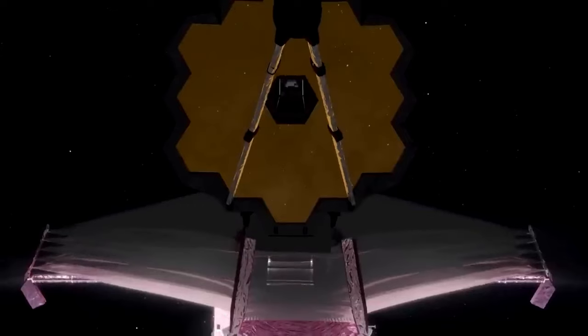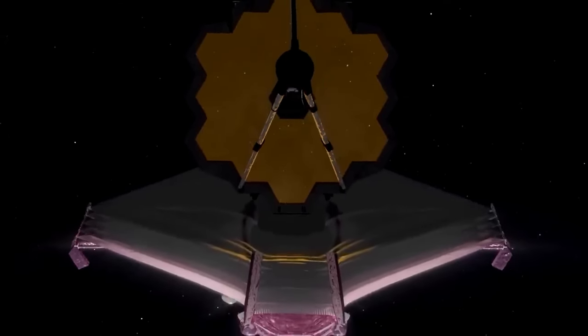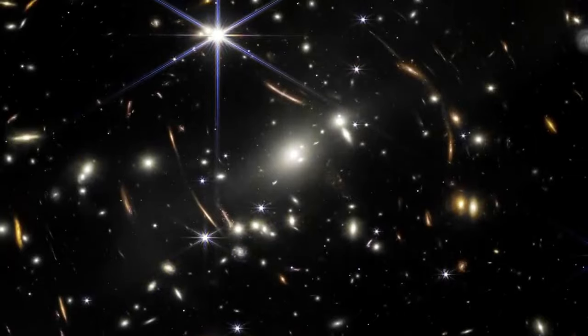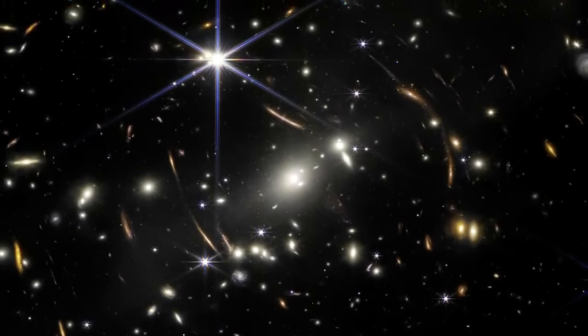The telescope showed a picture of the so-called deep field, an image of a small section of space with a very long shutter speed, allowing you to look deep into the early universe.